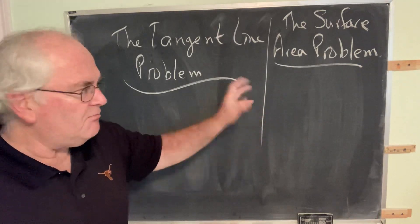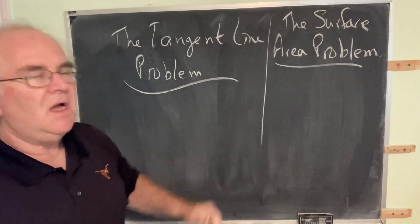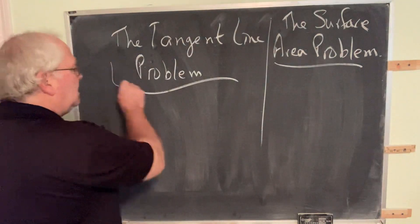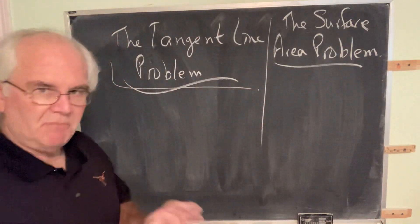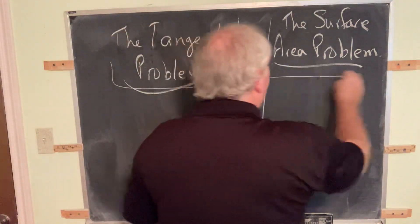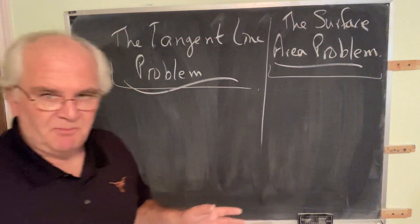We will consider both of these issues. Most of what calculus one is about is the tangent line problem. Most, not all. And most, not all, of what calculus two is about is the surface area problem.